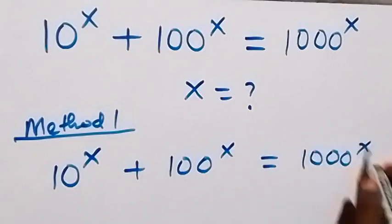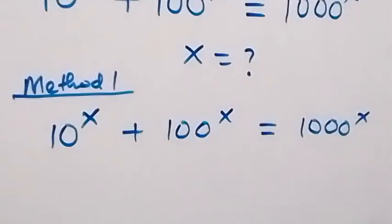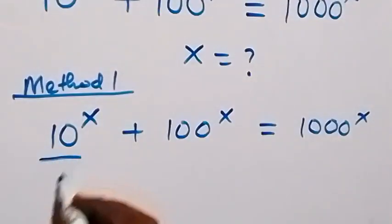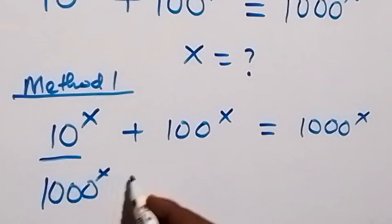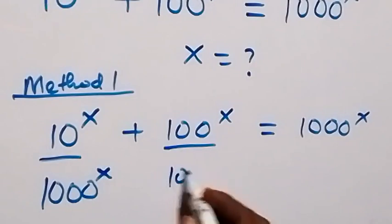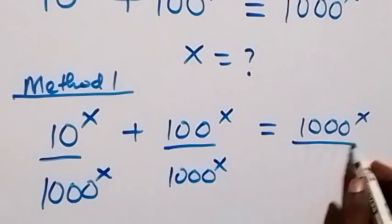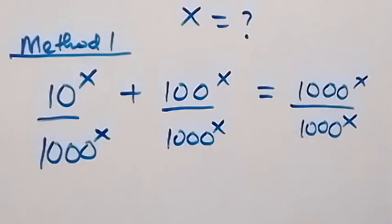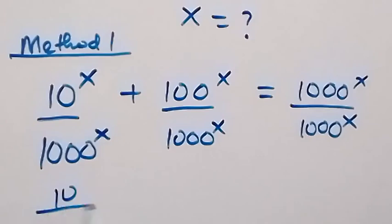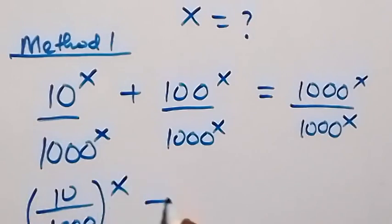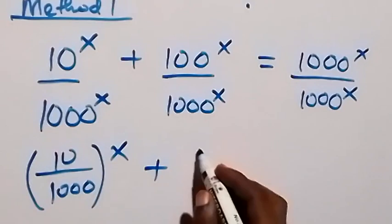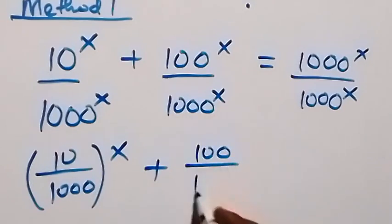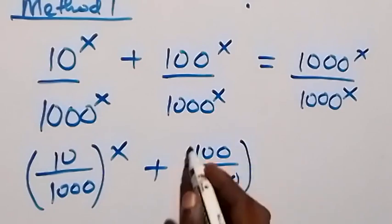From here, let's divide by 1000 raised to power x. So this side divided by 1000 raised to power x, then divide this by 1000 raised to power x, then this divided by 1000 raised to power x. Then we can apply the law of indices here, and we write it as 10 over 1000 raised to power x plus 100 over 1000 raised to power x.